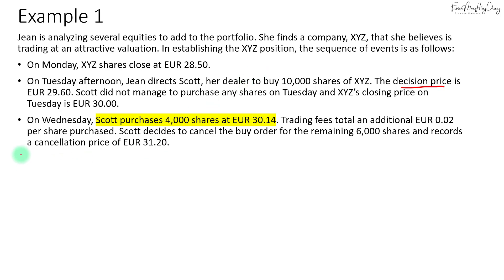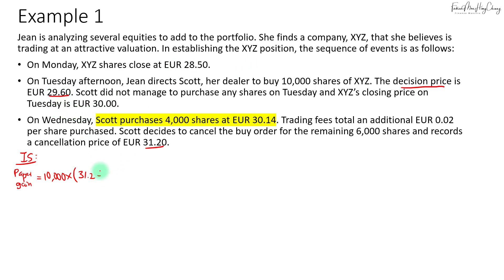If you are just calculating the implementation shortfall, we calculate the paper gain. The paper gain equals the number of shares you planned to buy, which is 10,000 shares, multiplied by the ending price of 31.20, minus the decision price of 29.60.